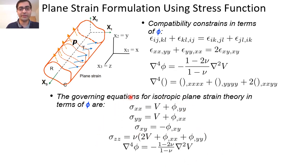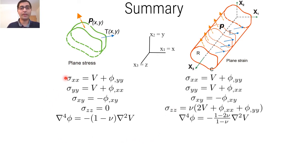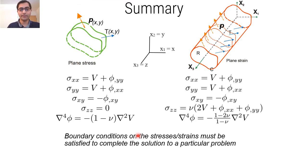The first three equations are similar to the plane stress case, but we have an additional relation for sigma_zz, and as a result we get a different compatibility constraint as well. In summary, between the plane stress and strain cases, we end up with two sets of governing equations, and we need to satisfy the boundary conditions on stresses and strains to find a complete solution for a particular problem.